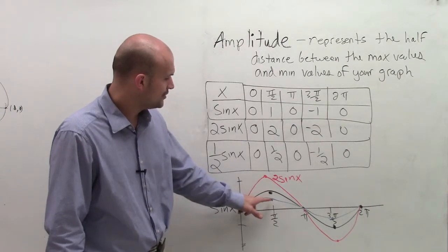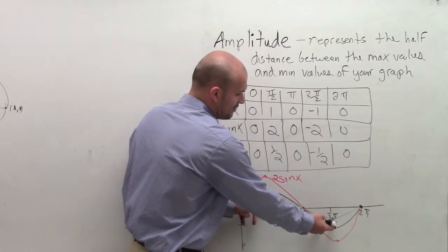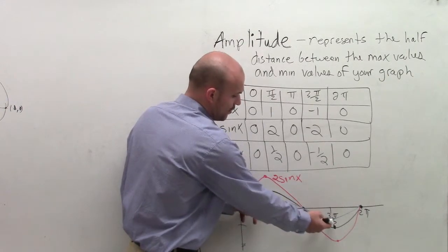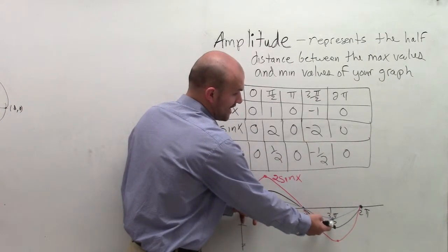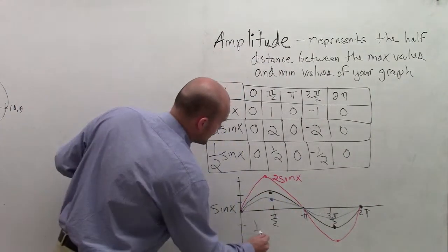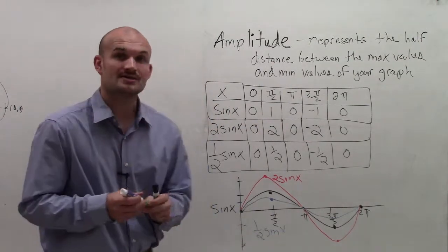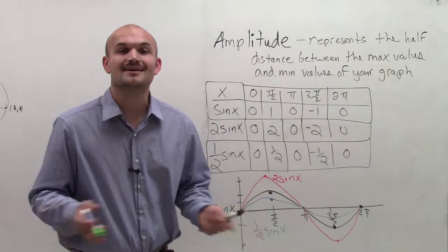And then our blue, you can see the max distance between our maximum value and our minimum value is vertical distance of 1. So the half value of that is one half, which again, we notice that our blue function is multiplied by one half of x. So there it goes, ladies and gentlemen. That is your definition of amplitude.